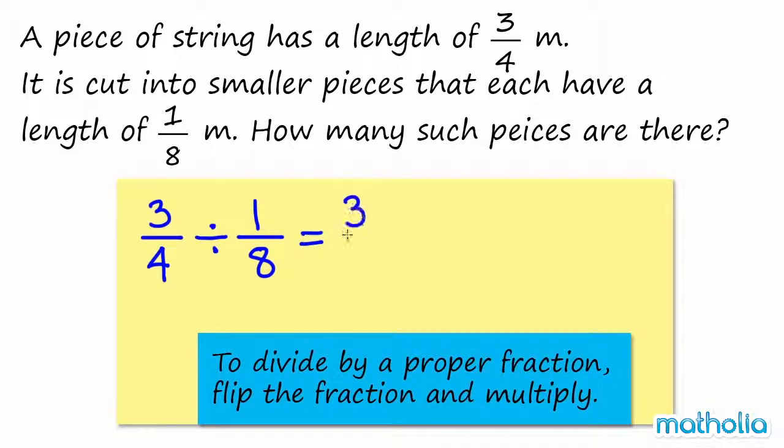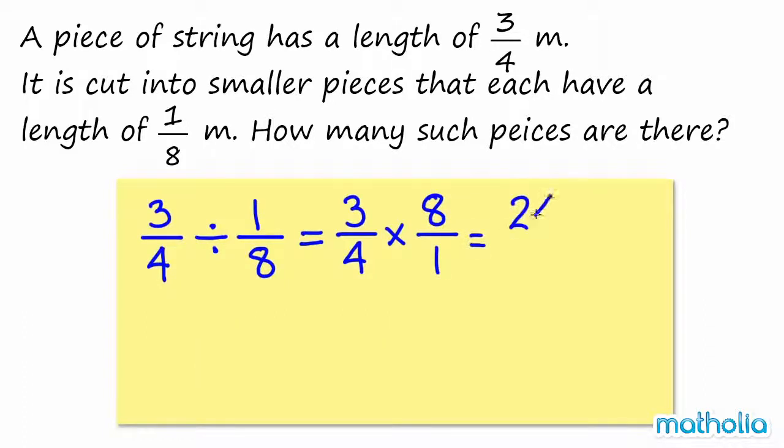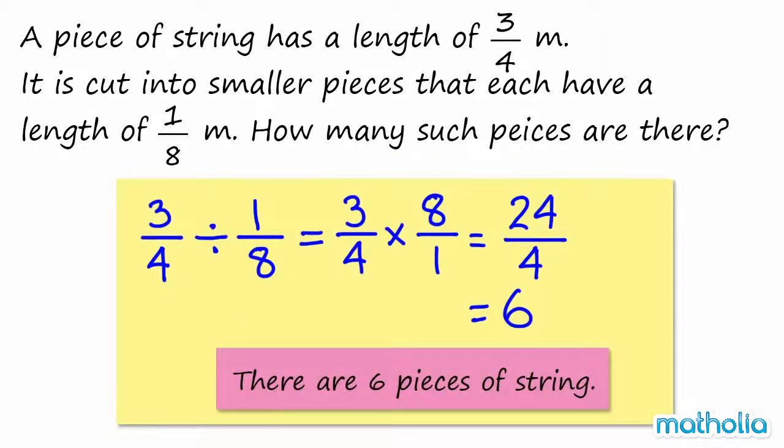Flipping 1 eighth gives us 8 over 1, so 3 quarters divided by 1 eighth is equal to 3 quarters times 8 over 1. 24 quarters is equal to 6, so there are 6 pieces of string.